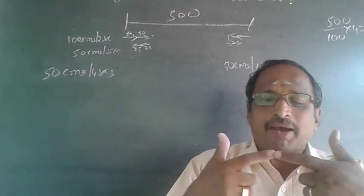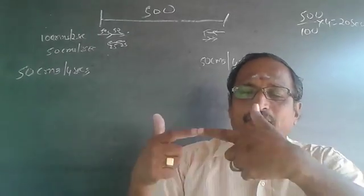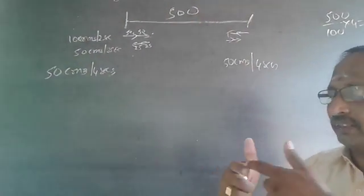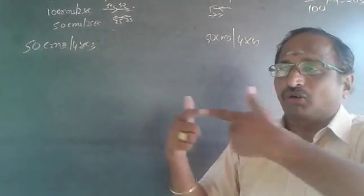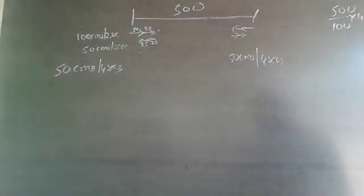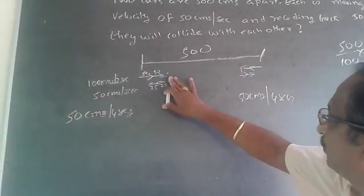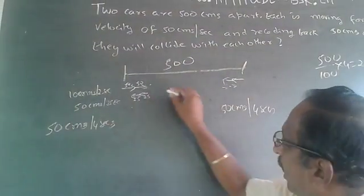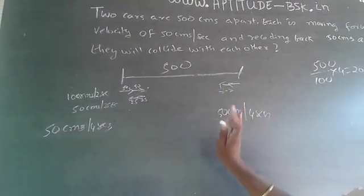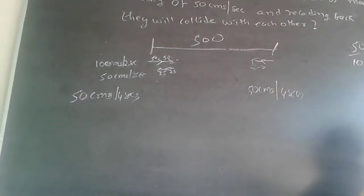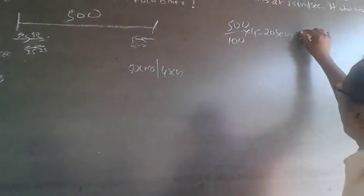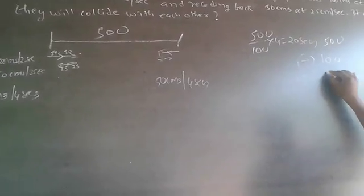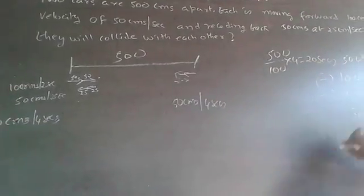Once it collides — bumper to bumper — there is no question of moving backward or forward. So you have to make the cars collide exactly. The last 100 centimeters of the first car and the last 100 centimeters of the second car are only for the final 2 seconds going forward — they need not come back. So from 500, subtract 100 for the first car and 100 for the second car, leaving 300 centimeters to be covered.